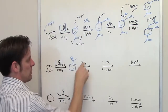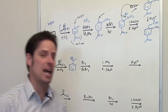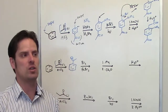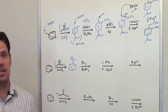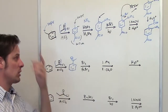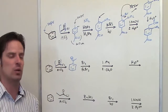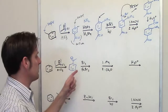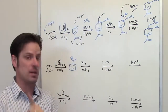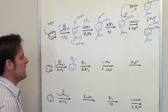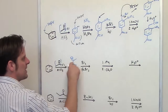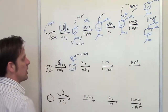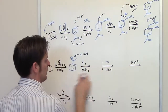Now I take this product and treat it with bromine and iron bromide — that is different from Br₂ and light. Br₂ and light (or NBS and light) places bromine on the benzyl carbon. Br₂ and iron bromide, however, places bromine onto the ring itself. Where does it go? That depends on the existing substituent. The acyl group is a withdrawer, so I remember W equals M: the bromine goes meta relative to that substituent. The final product has bromine at the meta position.